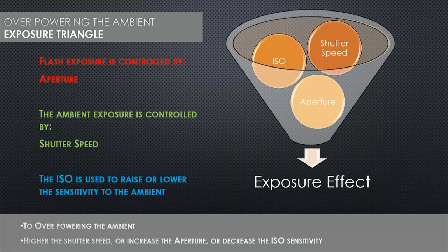The overpowering of the ambient light is the key thing. The exposure triangle hasn't changed — ISO, shutter speed, and aperture. But flash exposure is controlled mainly by the aperture. The ambient exposure is controlled by the shutter speed that you set. The ISO is used to raise or lower the sensitivity to the ambient light within the scene. In a nutshell, that's the easiest way to explain it. So if you try to get F22 on a speedlight and the speedlight is too far away from the subject, there's probably a very good chance you're not going to be able to obtain it.